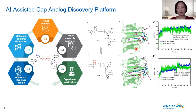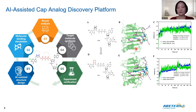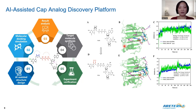How do we discover all those new caps? We employ an AI-assisted cap analog discovery platform. The first step is in silico design. We design different modifications and different structures based on this backbone. Once we design the molecule, we perform molecular docking to see which molecule binds to EIF4E the strongest.